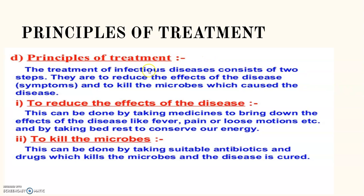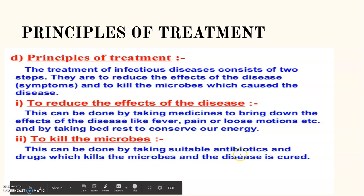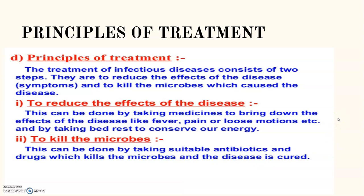Now, principles of treatment. Any type of infection involves two steps of treatment. First is to reduce the effect of the disease — that is, to reduce symptoms like fever, headache, and loose motion. Second is to kill the microbes which cause the disease. The medicines given to you for treatment either reduce the effects or can be an antibiotic or drug which kills that particular specific microbe in your body so that the disease can be cured.